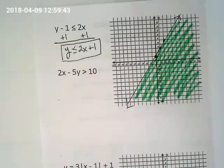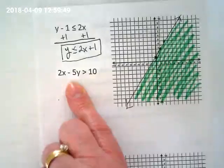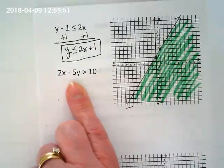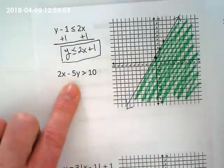The next one though doesn't have that line. It's going to be a dash. So let's go through the next one. What was our first step? Isolate the y. What do we have with the y that we want to get rid of?